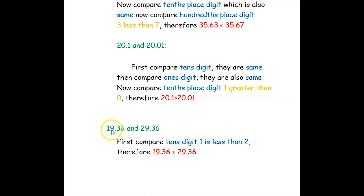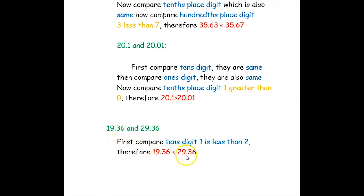The next pair is 19.36 and 29.36. Compare the first digit, which is the tens place: here it is 1 and here it is 2. Since 1 is less than 2, we conclude 19.36 is less than 29.36. We hope you have understood how to find the place values, how to compare decimal numbers, and how to write decimal numbers in expanded form. Thank you for watching this video.